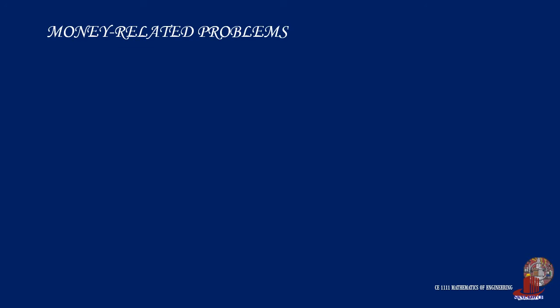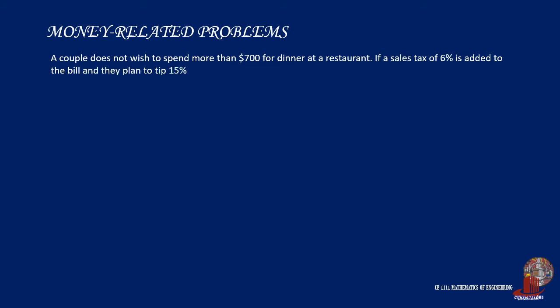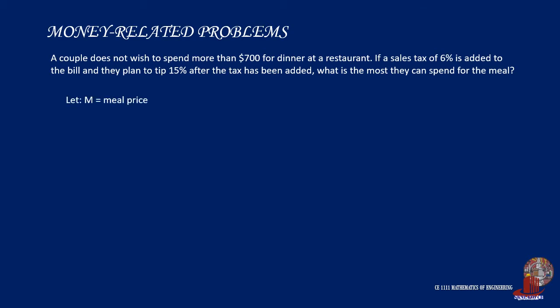Starting off with money-related problems, here is example number one. A couple does not wish to spend more than $700 for dinner at a restaurant. If a sales tax of 6% is added to the bill and they plan to tip 15% after the tax has been added, what is the most they can spend for the meal? Let's denote M for the price of the couple's meal. The sales tax is given as 6%, making the whole price equal to 1.06M.